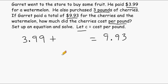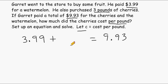Just by looking at what we have set up so far, we can see that we are taking the price of the watermelon and adding it to the price of the cherries to get a total of $9.93. So what we could do is take the total and subtract the price of the watermelon — what would remain is the total cost of the cherries, not the price per pound. We would have to divide that cost by three pounds to find the price per pound. But we have to set up an equation and solve to show this process algebraically.